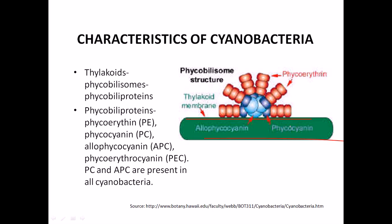Allophycocyanin and phycocyanin interact with each other to make the base for a characteristic bulge-like structure, and subunits of phycoerythrin arrange themselves to create a sun-like structure on the surface of the thylakoid membrane. This whole structure together is called the phycobilisome.